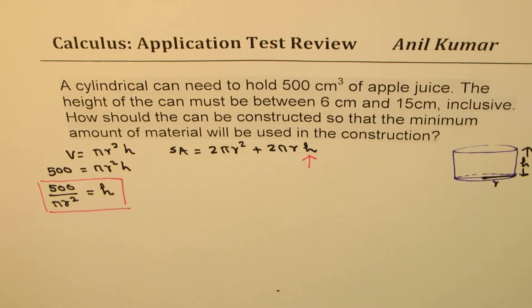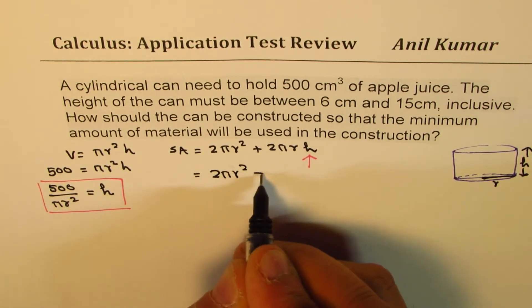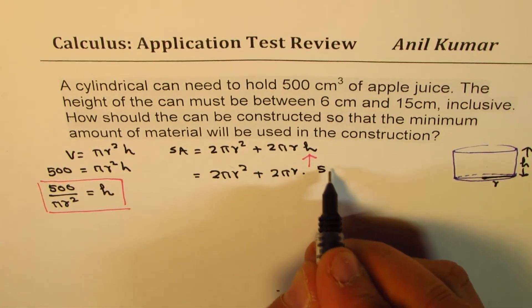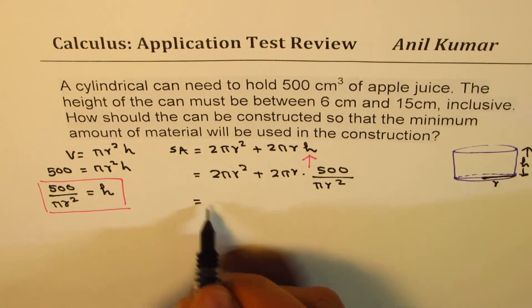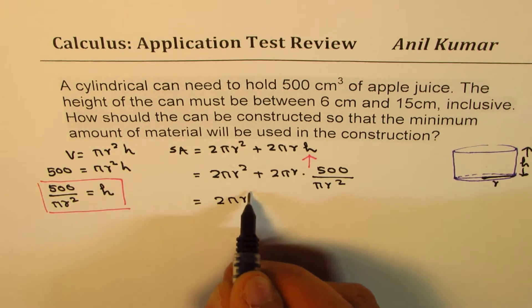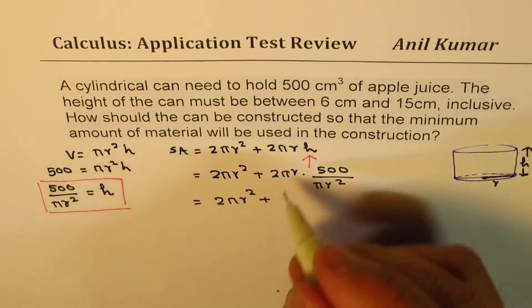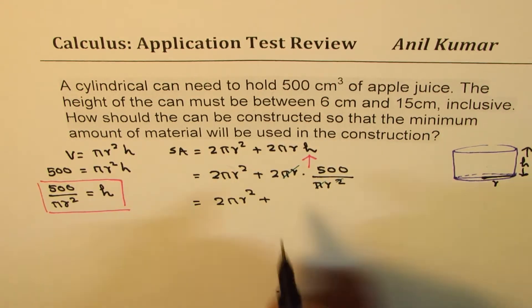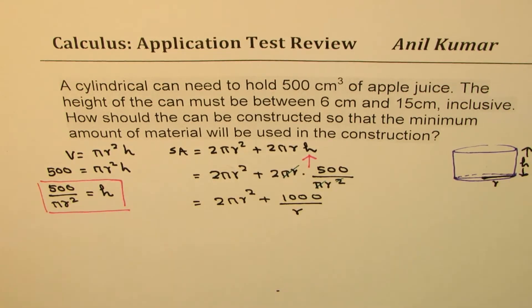So we could write surface area as 2πr² plus, this is 2πr times height, which is 500 over πr². And this can be simplified as 2πr² plus, 2 and πr gets cancelled, so we are left with 2 times 500 is 1000 over r. So that is the surface area. So we'll work with this relation.